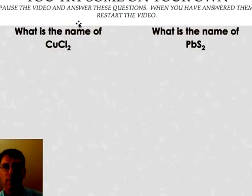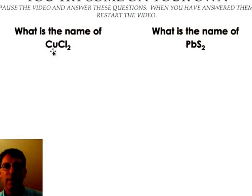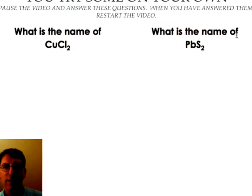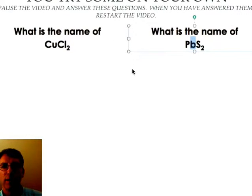Let's have you try some on your own. So I want you to try these two. What is the name of copper with two chlorines attached? And what is the name of a compound that is a lead with two sulfurs attached? So pause the video at this point and take a look at what you think and then restart the video.